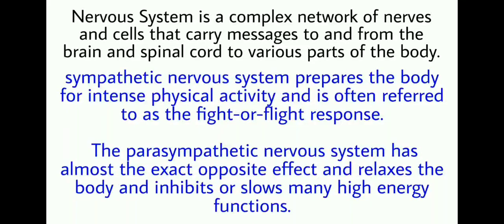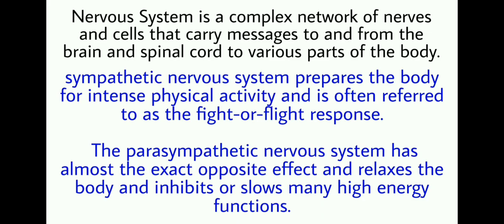Before learning the differences between the sympathetic and parasympathetic nervous system, let's revise some basics. The nervous system is a complex network of nerves and cells that carry messages to and from the brain and spinal cord to various parts of the body. The sympathetic nervous system prepares the body for intense physical activity and is often referred to as the fight or flight response. The parasympathetic nervous system has almost the exact opposite effect — it relaxes the body and inhibits or slows many high energy functions.